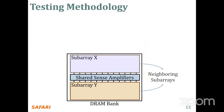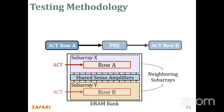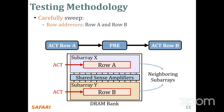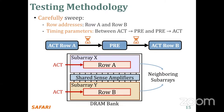In this study, we focus on two neighboring subarrays — denoted as subarray X and subarray Y — which share common sense amplifiers. We perform our experiments using the following command sequence: activate row A in subarray X, pre-charge, and activate row B. We carefully sweep four parameters: row addresses for row A and row B, and timing parameters between row A activation and pre-charge, and between pre-charge and row B activation.